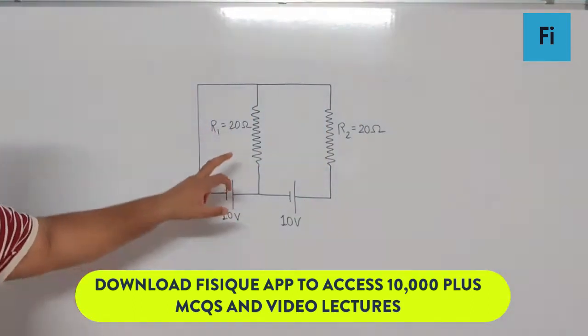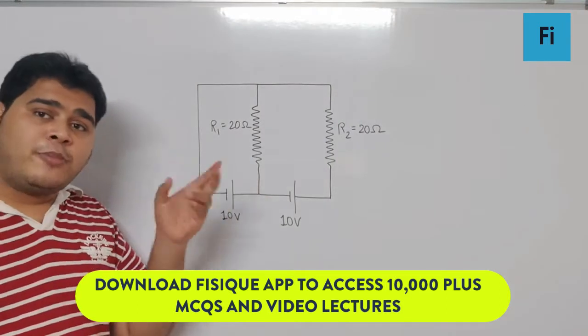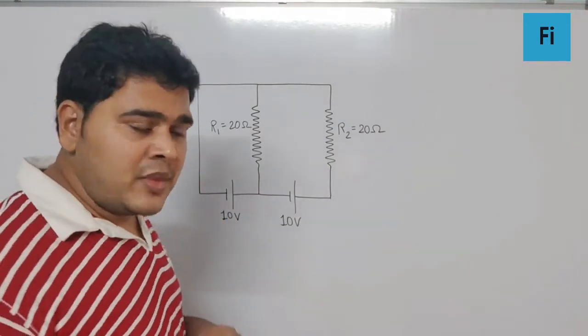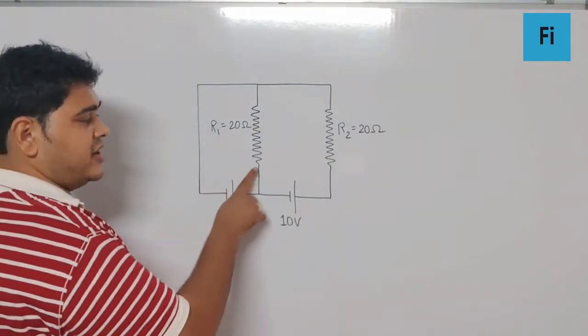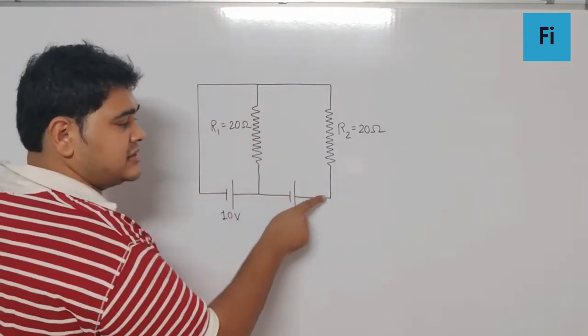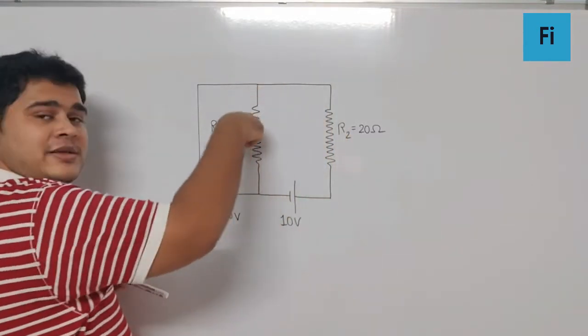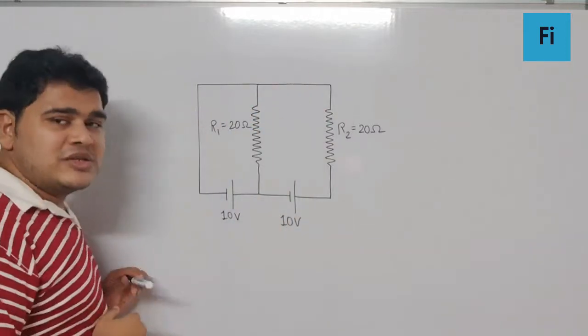That is, this will give the current like this and this will provide a current like this, so the current is going to go in the opposite direction.